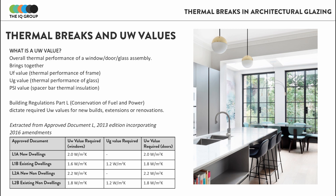All of these values come together to create the weighted U value for the window or door — this is called the UW value. Building regulations state the minimum UW value you need for your project, and you can see those values shown here.